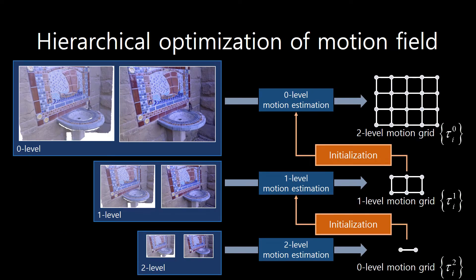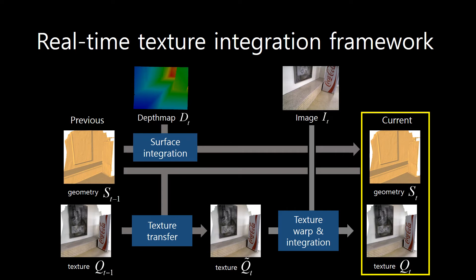We optimize the camera motion grid by maximizing the photometric consistency of the local 3D texture patch with respect to the image, in a multi-level fashion from coarse to fine. For each level, we optimize the camera motion grid and use it to initialize the next level motion grid. Finally, we warp the current image to be aligned with the previous texture map, then blend the current color image with the previous texture map together, thus updating the current texture map.